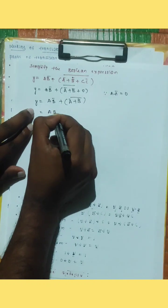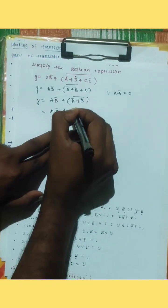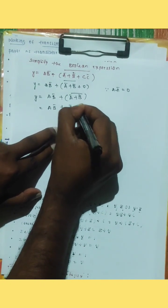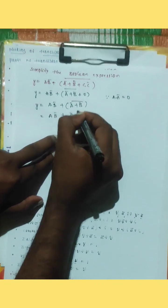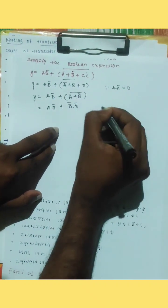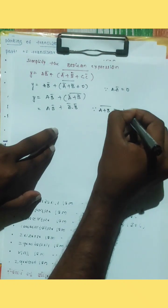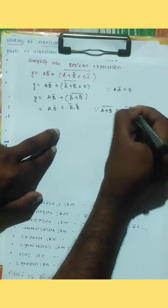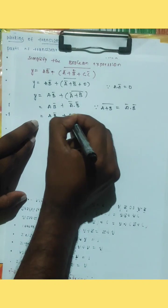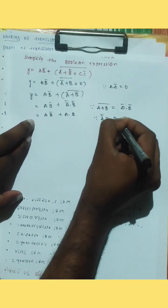ab bar plus a bar dot b bar — because a plus b whole bar equals a dot b. So, ab bar plus a into a dot b, because a bar bar equals a.